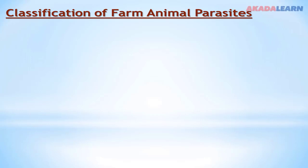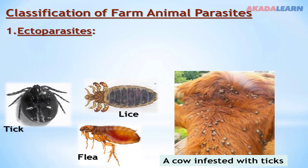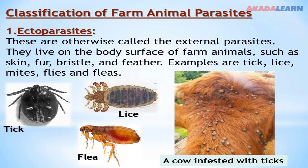Classification of farm animal parasites. Farm animal parasites are basically classified into two. We have those that live outside the body — that is, on the surface of the body — and those that live inside. Those that live outside the body are known as ectoparasites, also called external parasites. They live on the body surface of farm animals, such as skin, fur, bristles, and feathers. Examples of such parasites are ticks, lice, mites, flies, and fleas.